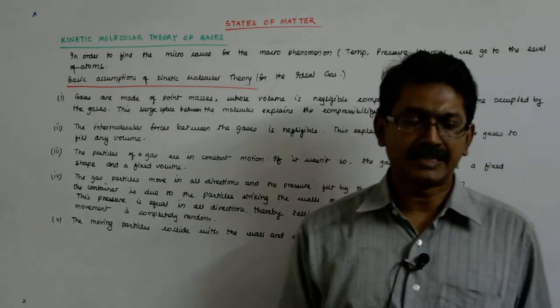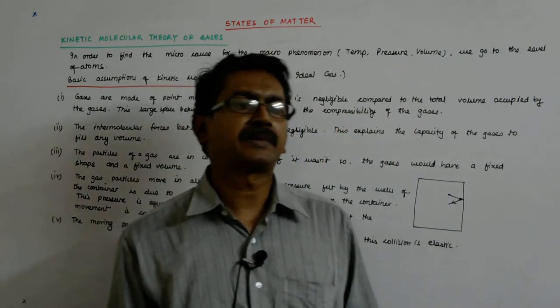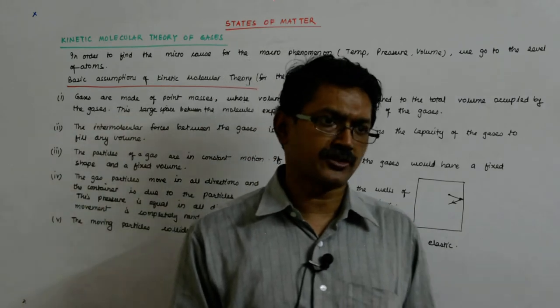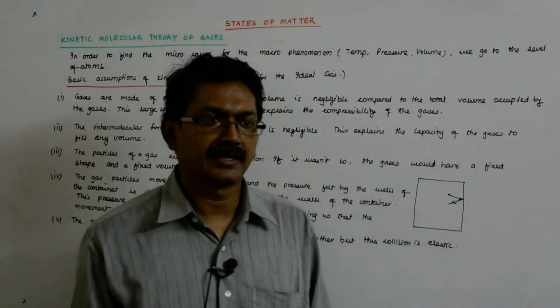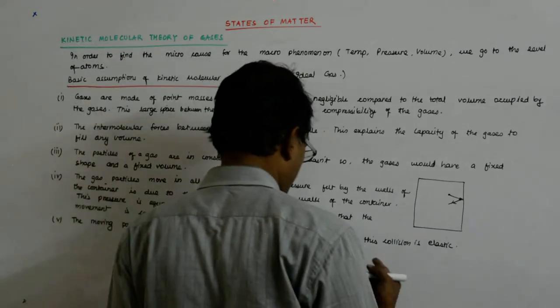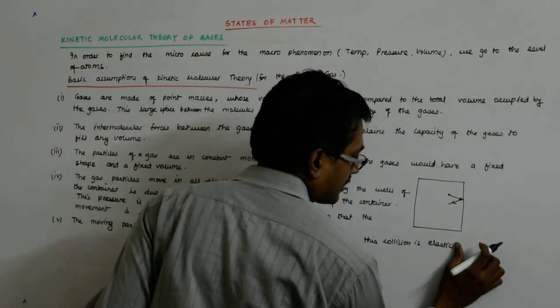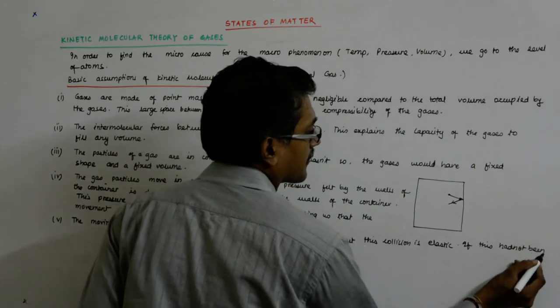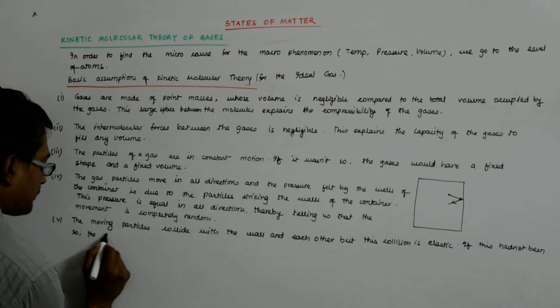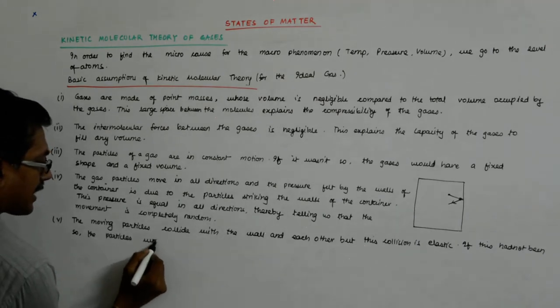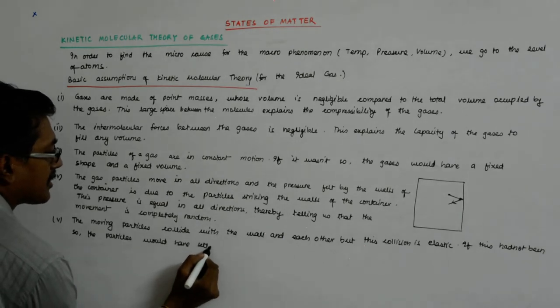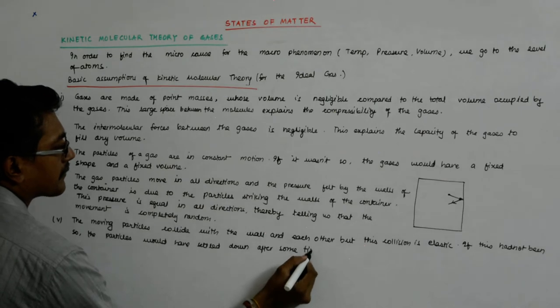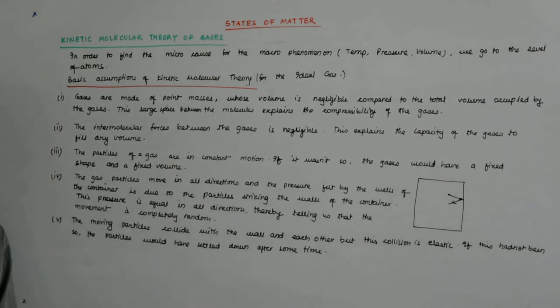Why? Because if it is not elastic, then it will keep on losing some energy. After some time, they'll keep on losing velocity until they become stationary and settle down in the container. That never happens. So the collisions with the wall and each other must be elastic. If this had not been so, the particles would have settled down after some time. This is never observed.